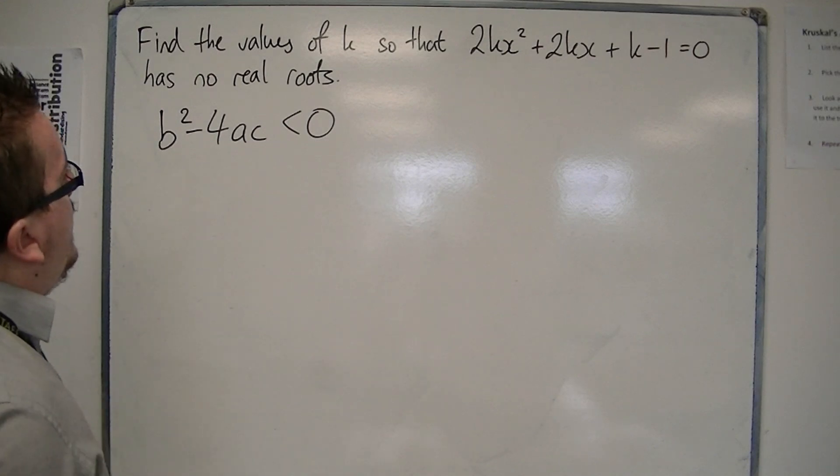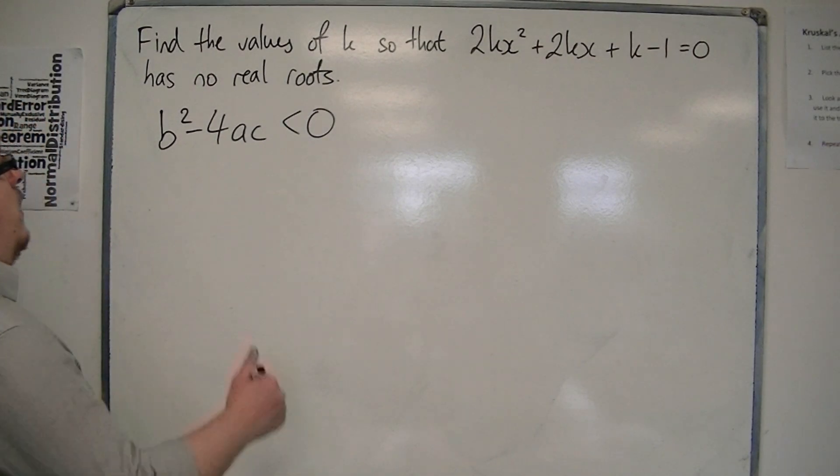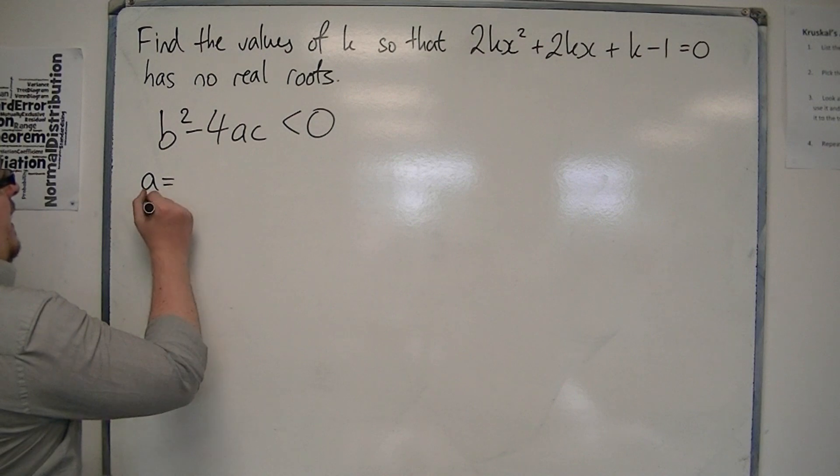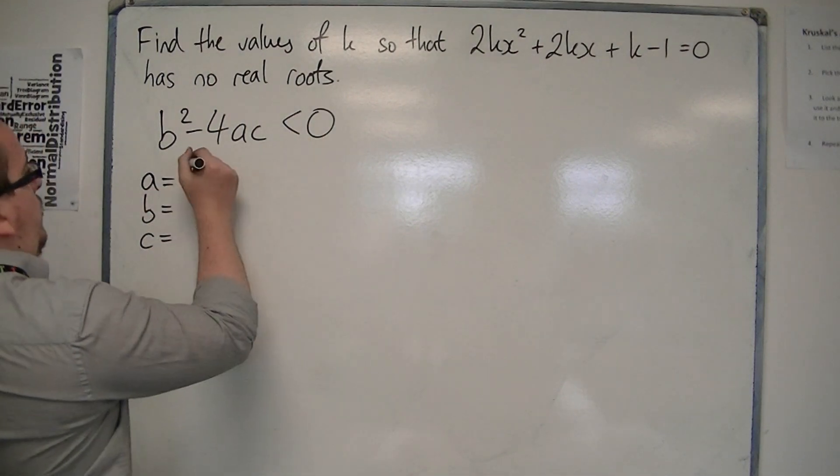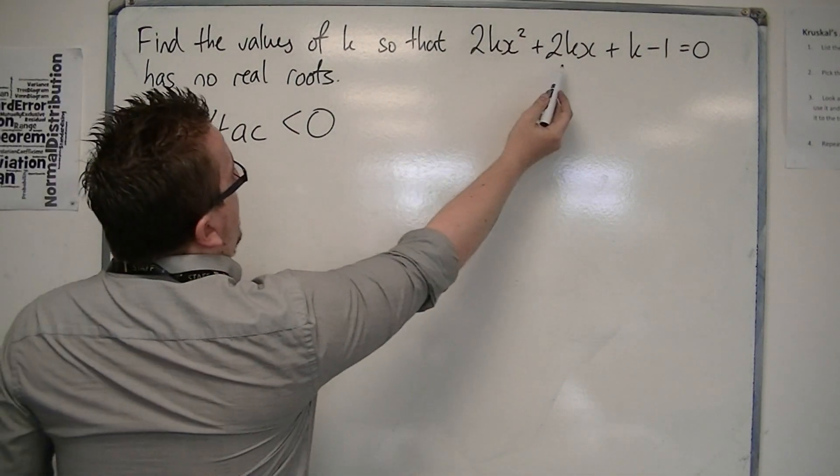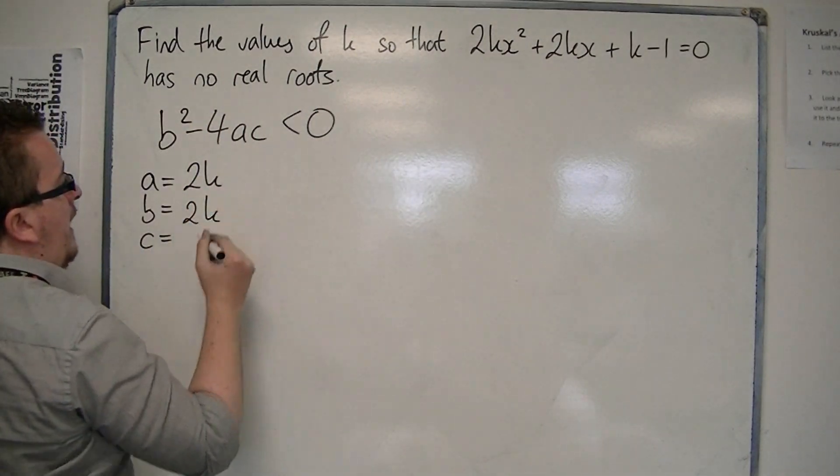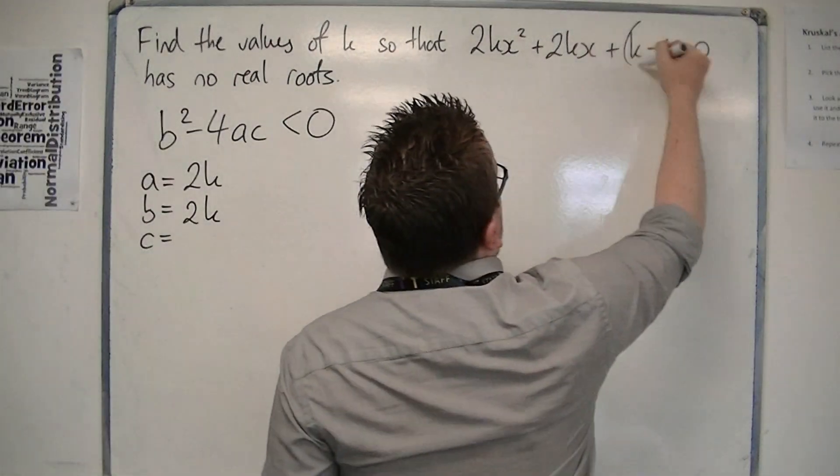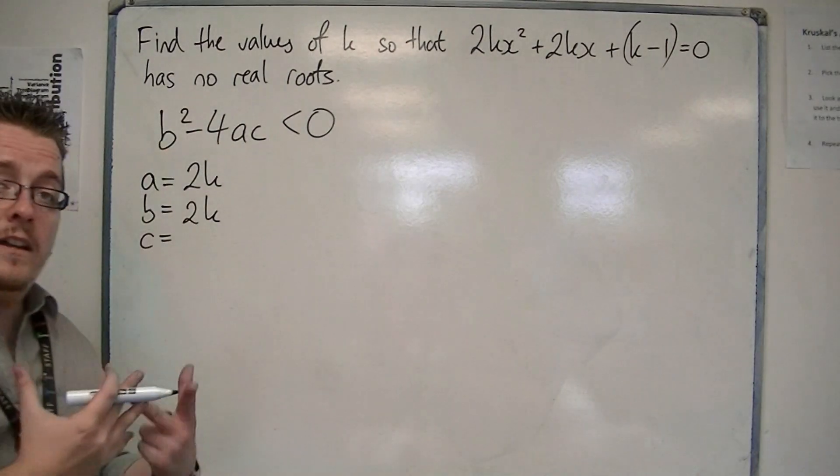If the discriminant is less than 0, we need our values for a, b, and c. A is 2k, b is 2k, and c is k - 1, that constant term.